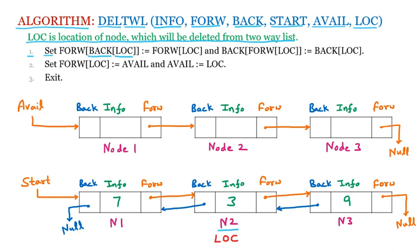The first line of the algorithm sets: FORW[BACK[LOOK]] = FORW[LOOK]. Starting from the inner bracket: BACK[LOOK] means the backward of location (node 2), which points to node 1 — so we are on node 1. Then FORW of node 1 is set equal to FORW[LOOK], which is the forward of node 2, pointing to node 3. So node 1's forward is now attached to node 3's address.